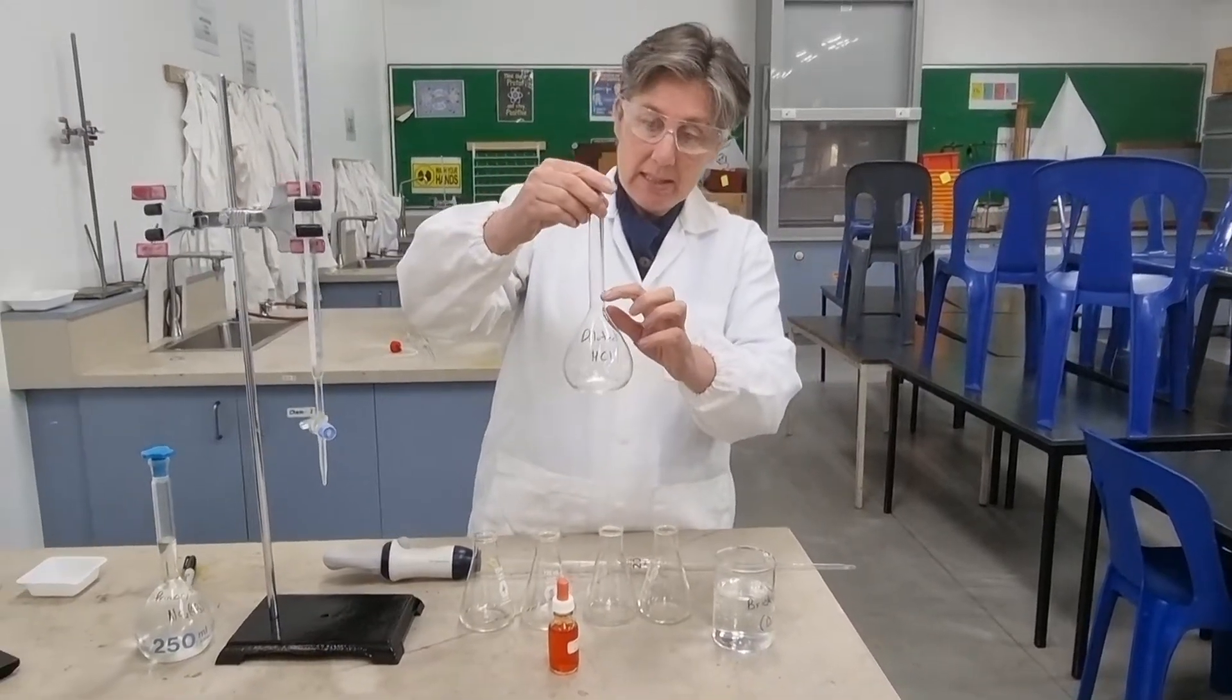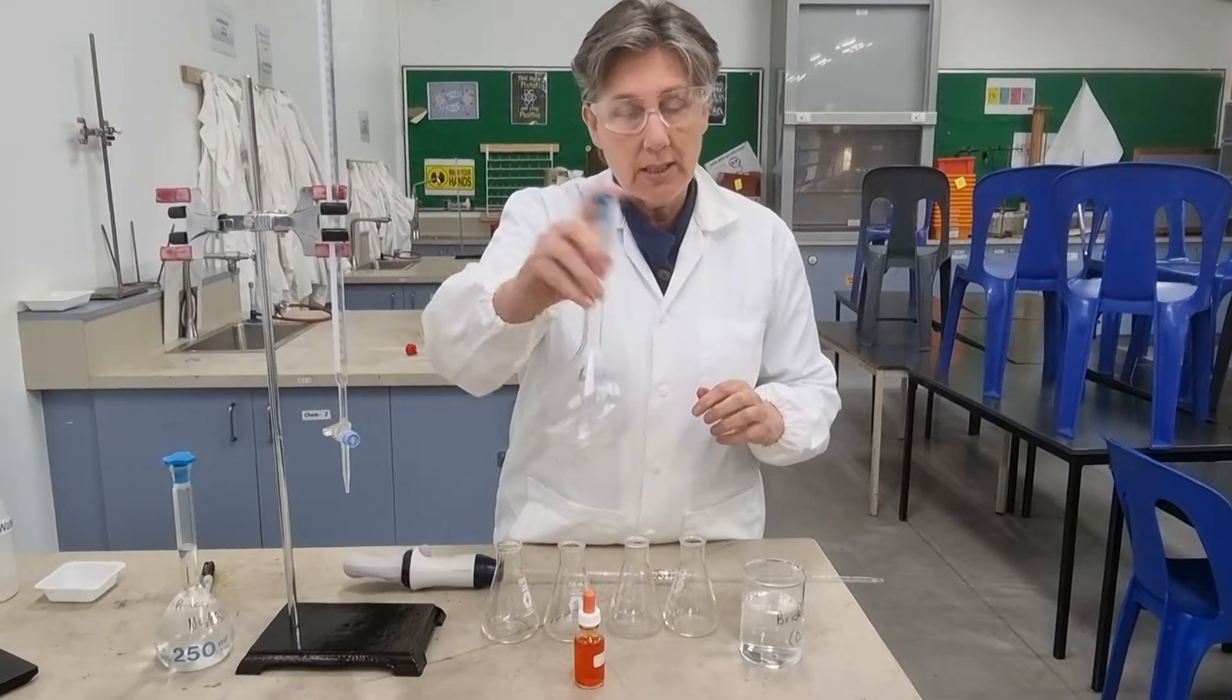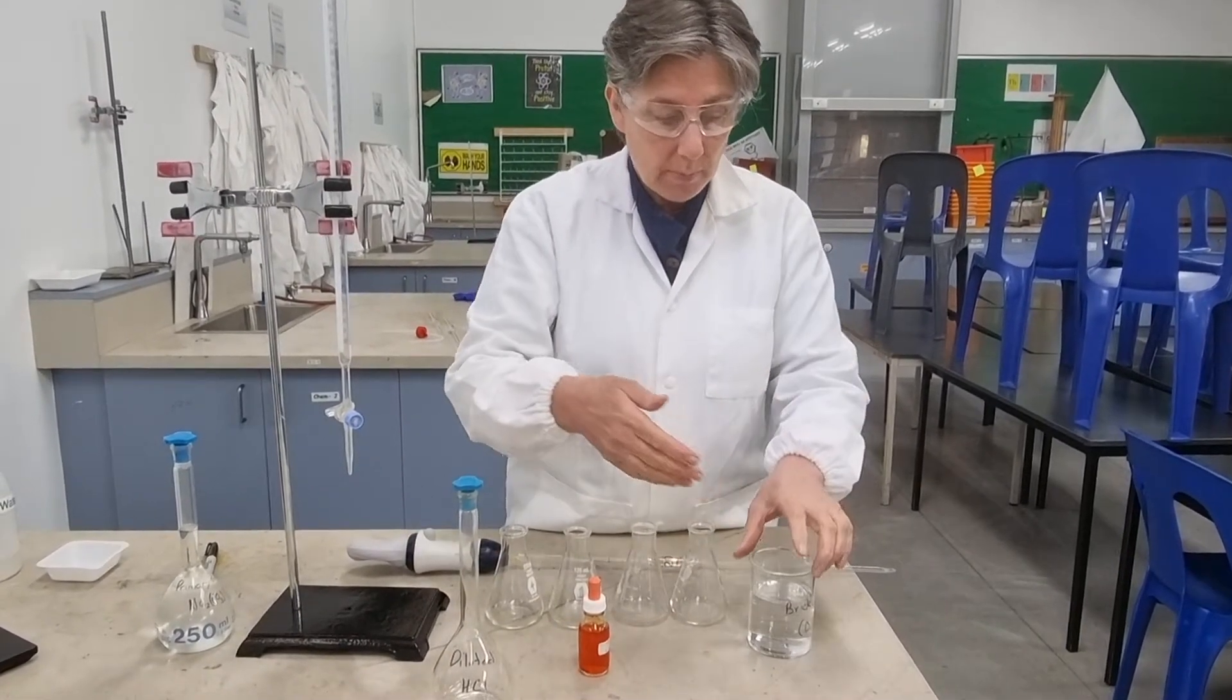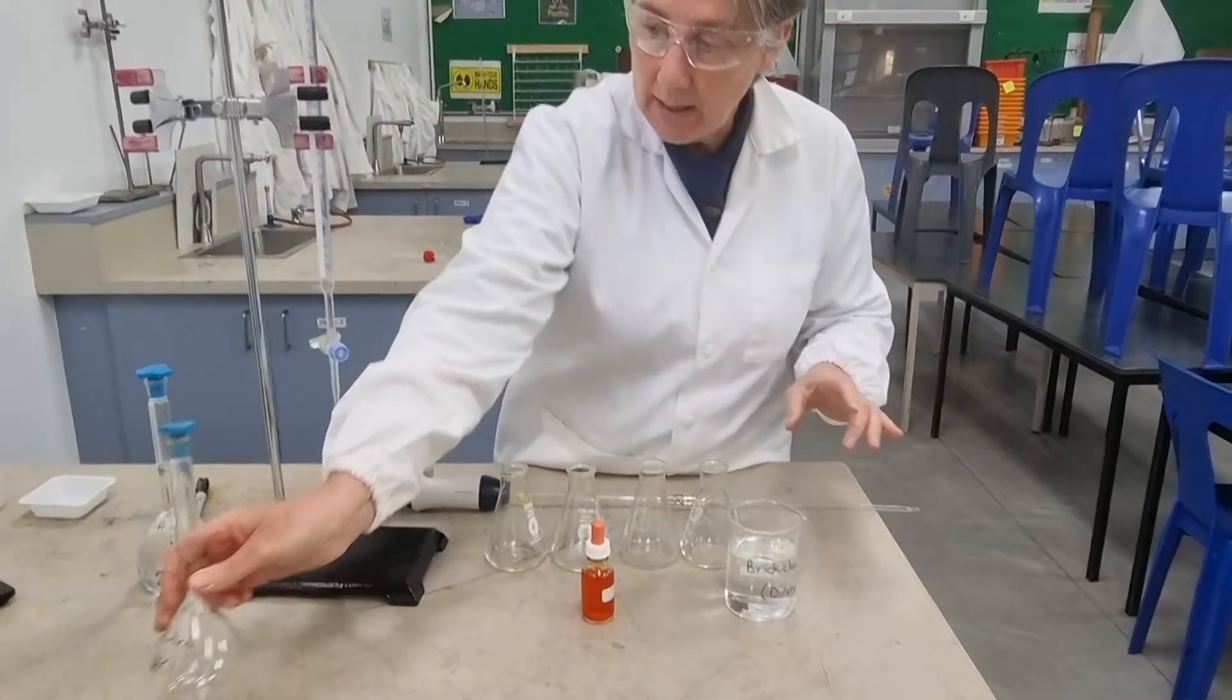Okay, so we made that up to the meniscus, up to the line here, and then we've inverted it to mix it. And then we've put the diluted hydrochloric acid brick cleaner into here. All right, so now we need to do multiple aliquots in our conical flasks.